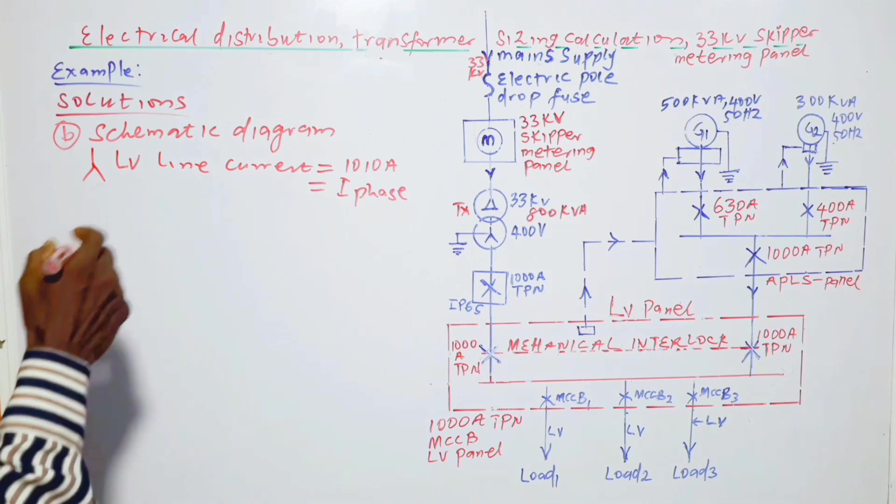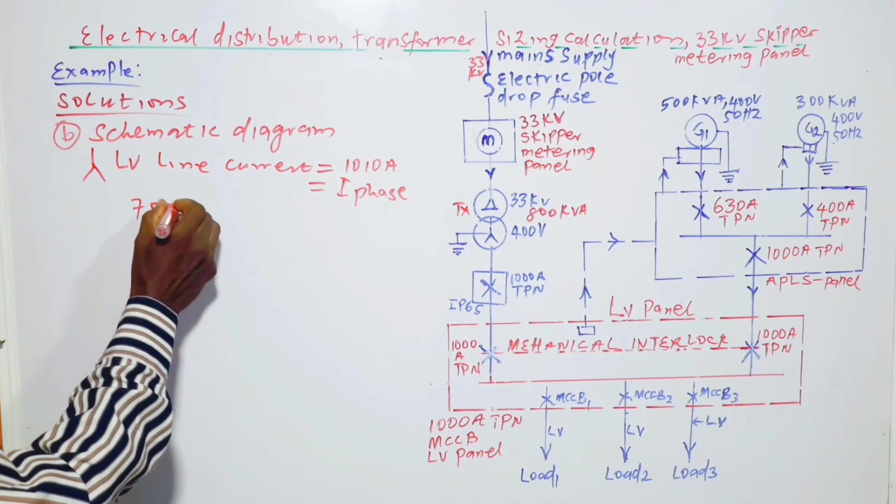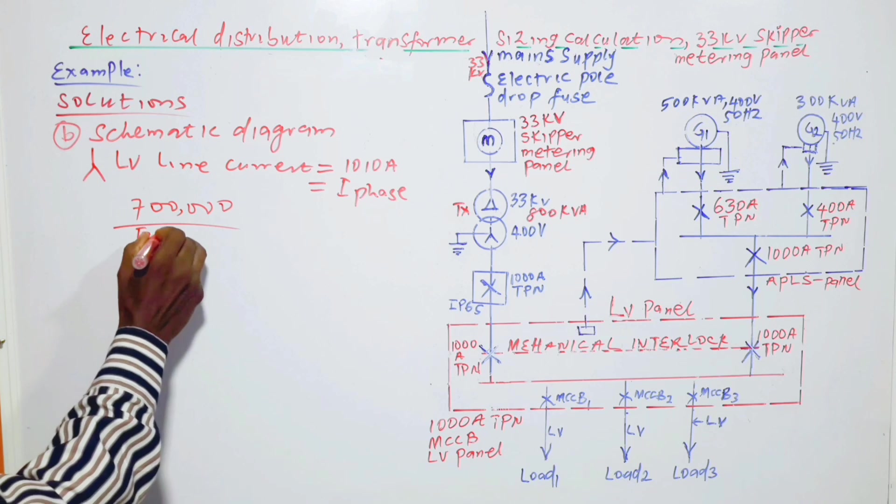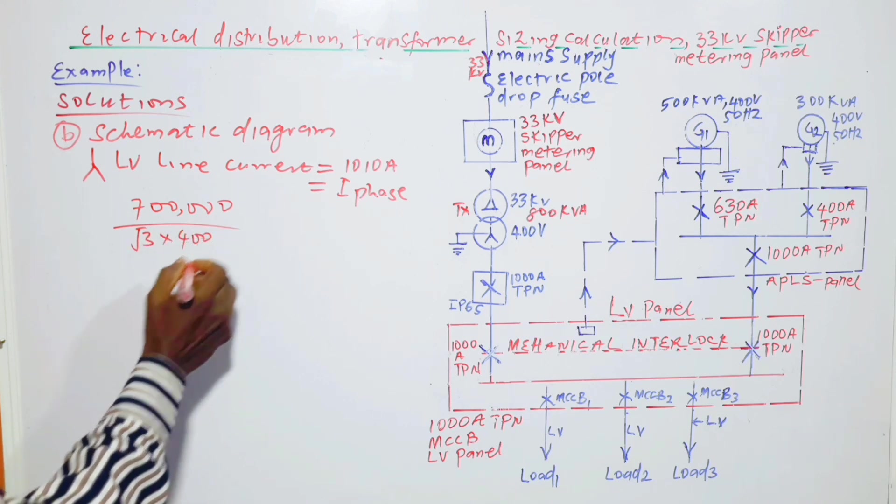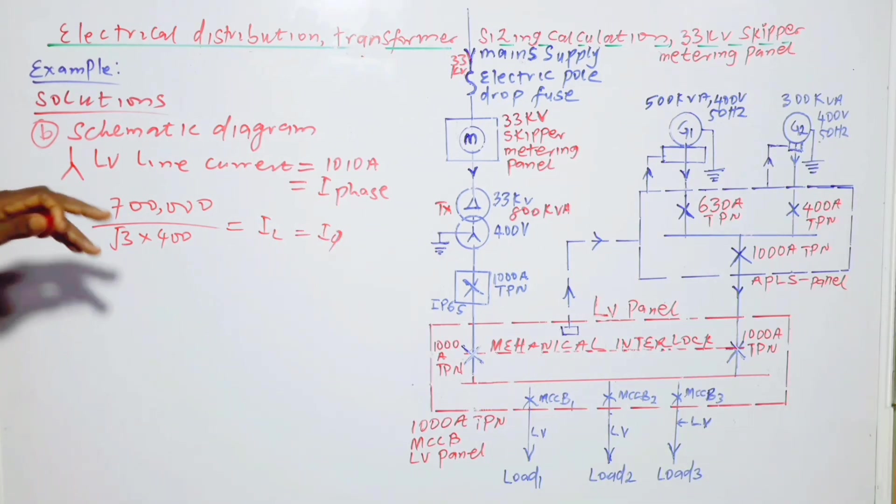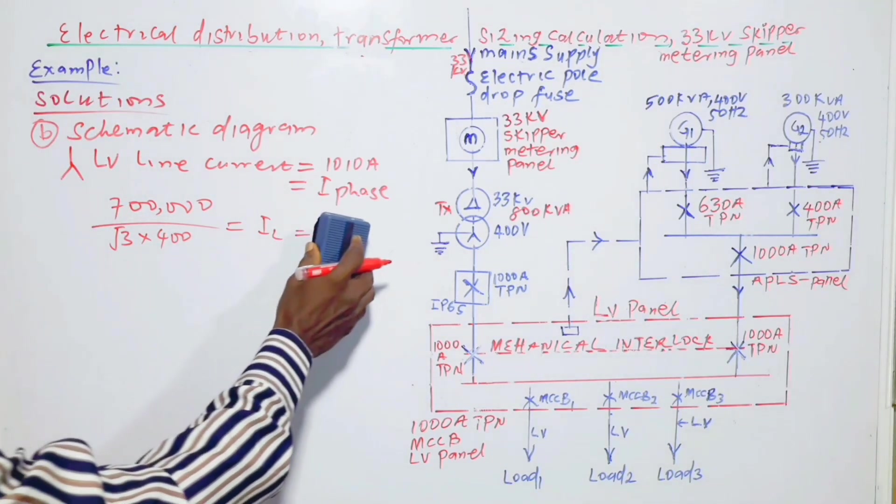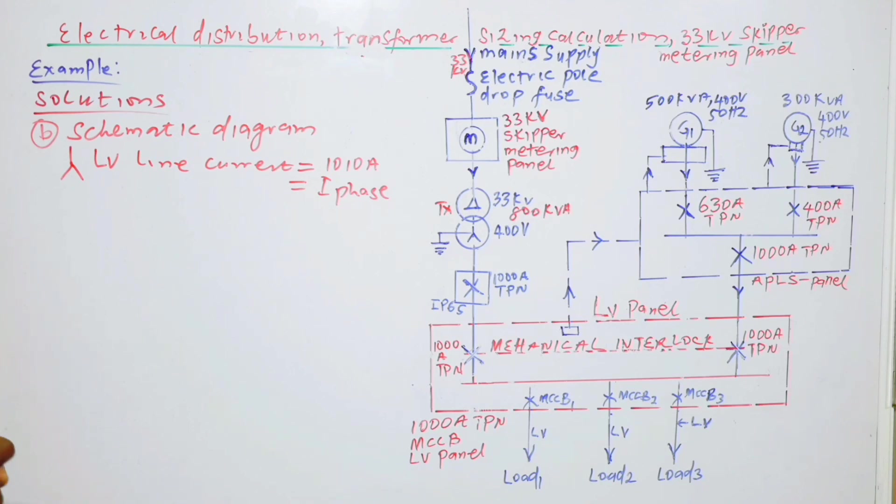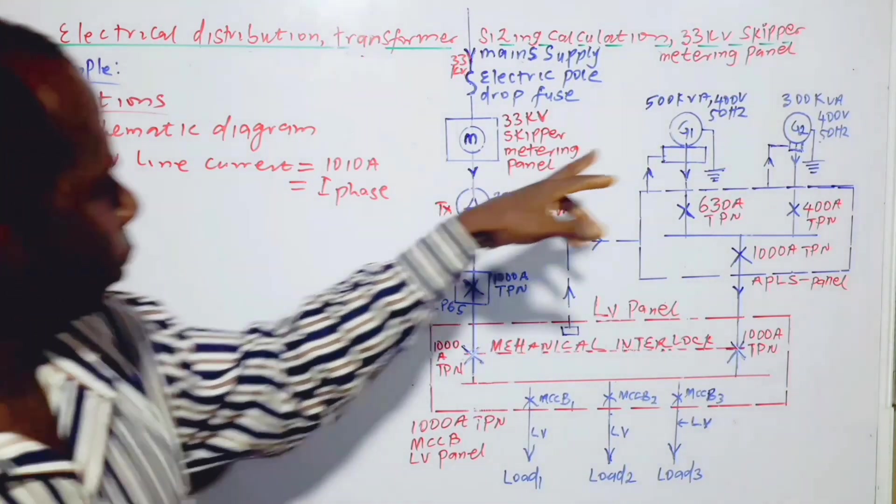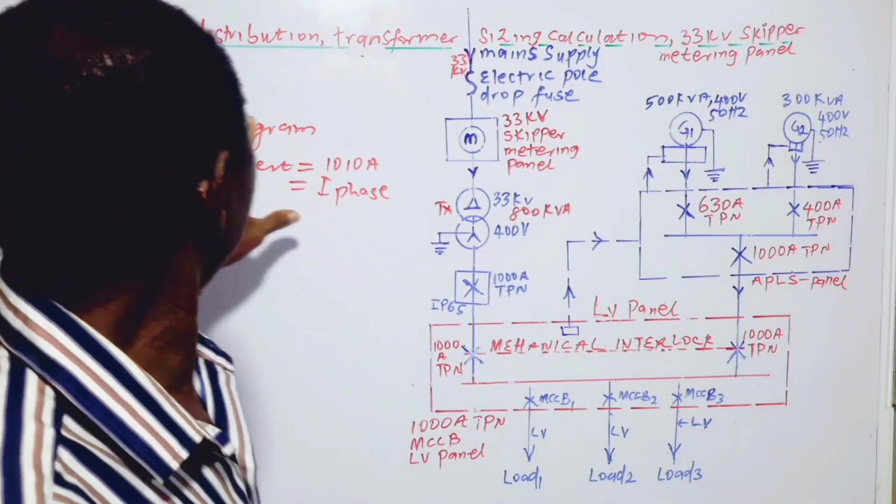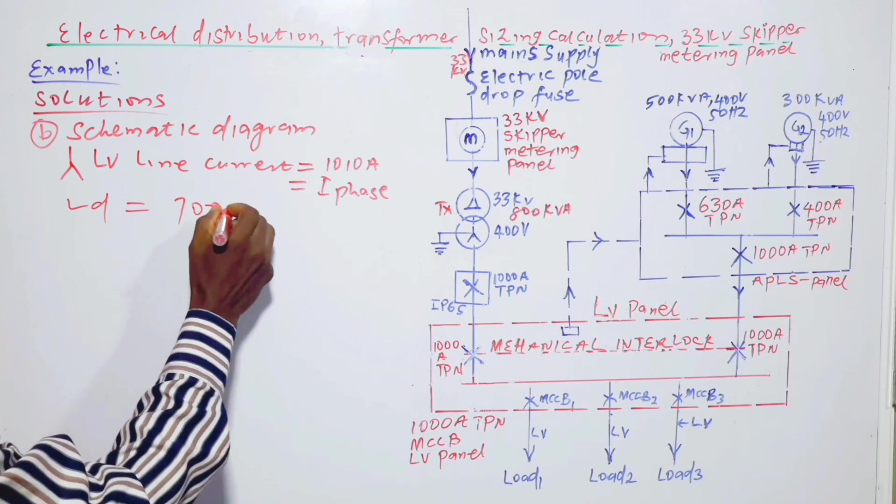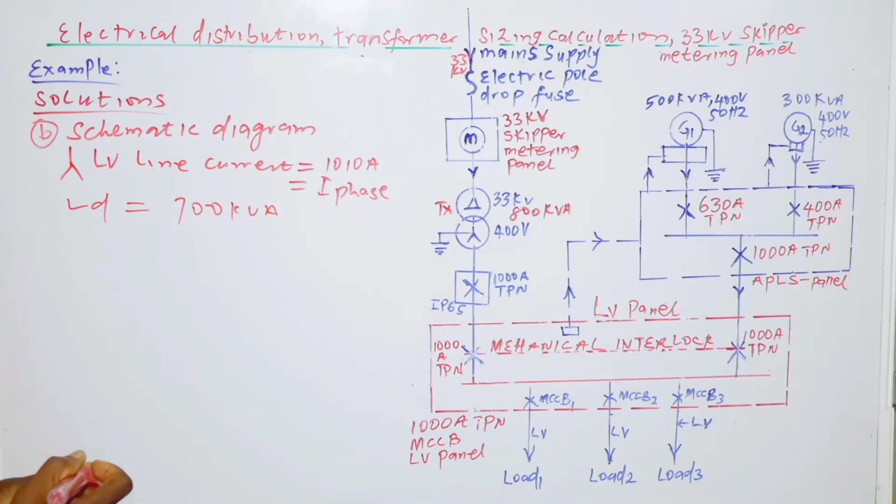Because from 700, if we divide it by 3 times 400, the current I line which is equal to I phase, the answer is 1010. The first thing, first of all, the load. The load is equal to 700 kVA. If we have 700, then we must select generators that will give us power, the apparent power that will be slightly greater than 700.